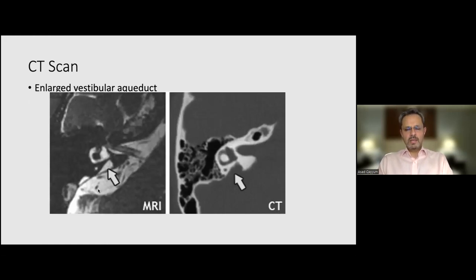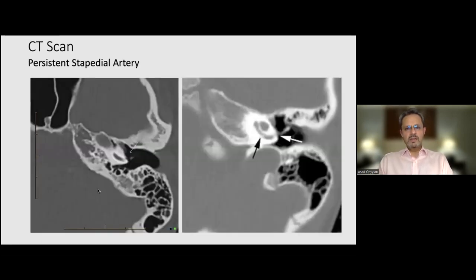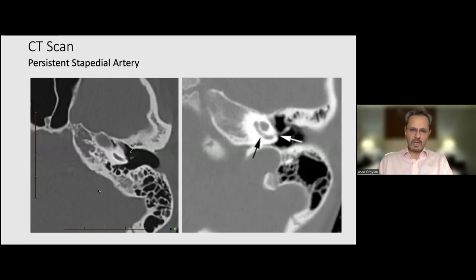The size and relationship of the vestibular aqueduct is important. If a patient has an enlarged vestibular aqueduct, I would advise against a stapes operation because of the higher risk of developing a perilymph gusher. If the patient still insists, informed consent detailing the risks is essential. A persistent stapedial artery is very difficult to find — I haven't seen a single one. But if there is a hazy opacification where a radiologist suggests a persistent stapedial artery, I would recommend further investigation with an angiogram.